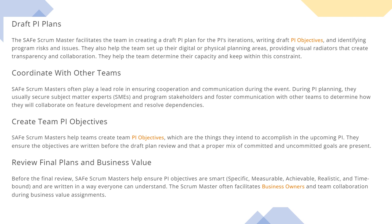The next area is creating the team PI objectives. The SAFe Scrum Master helps the team create team PI objectives, which are things they intend to accomplish in the upcoming PI. They ensure that objectives are written before the draft plan review and that a proper mix of committed and uncommitted goals are present. You can use models like MoSCoW and Kano to identify the right mix of stories to be identified as part of team PI objectives.